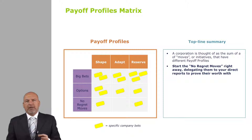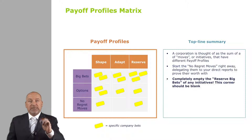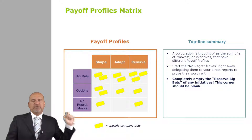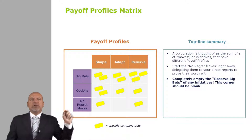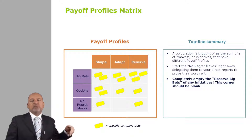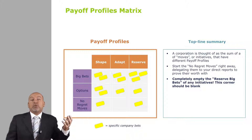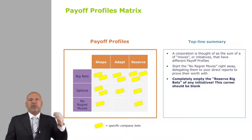The second action is to look at the top right corner — the big bets reserve. That corner should absolutely be empty. There is no reason for a company to take a big bet and only reserve the right to play as a result. If you look at the axes, shape, adapt, reserve is broadly a measure of rewards, and big bets, options, no regret moves is broadly a version of risk. So what we have here is a risk-reward matrix by another name, and big bets reserve represents too much risk for the reward being offered.